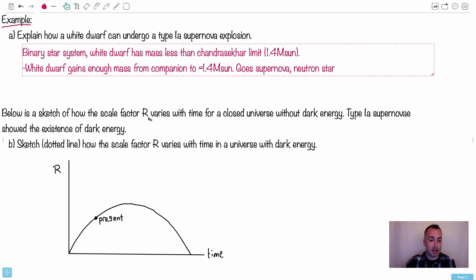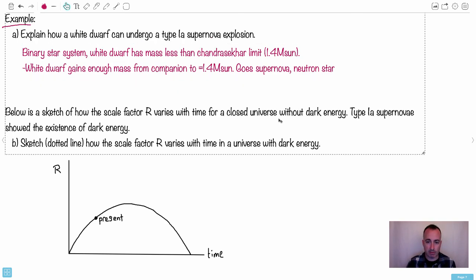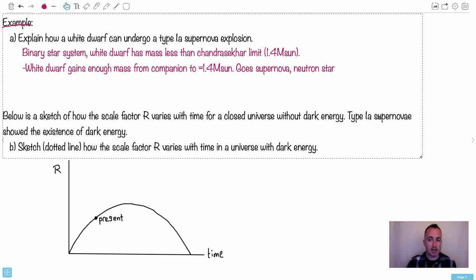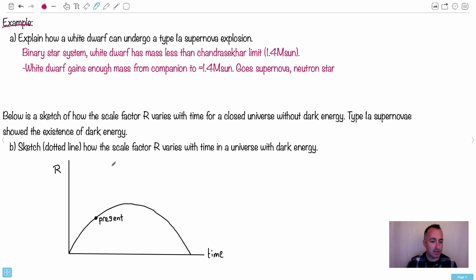So now we say below is a sketch of how a scale factor varies for a closed universe without dark energy. That's key. Type 1a supernova showed the existence of dark energy. Sketch as a dotted line how the scale factor varies in a universe with dark energy. You essentially had to do what I just showed you before, which is that instead of going curving downwards, it actually curves upwards. And you don't have to get the bottom part here. All they care about is you make it curve upwards. That's the important part. See? That's how you do this. So it's kind of mind-blowing stuff, right? But this is how you can deal with dark energy and actually solve exam questions for it.